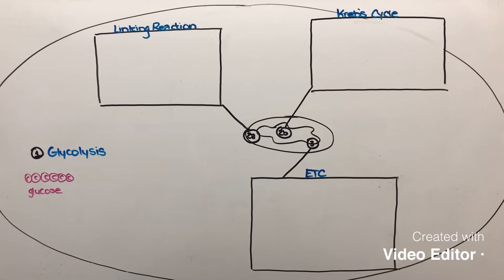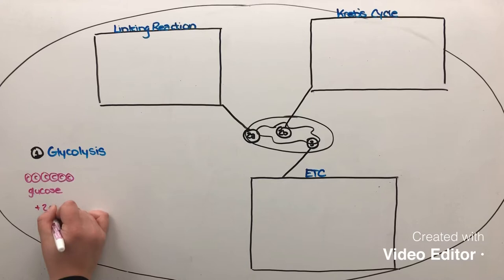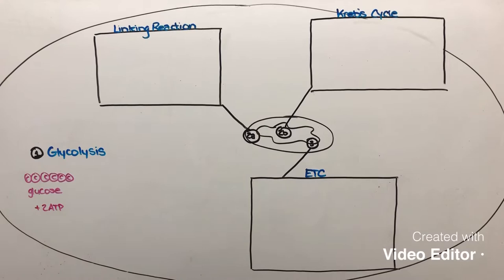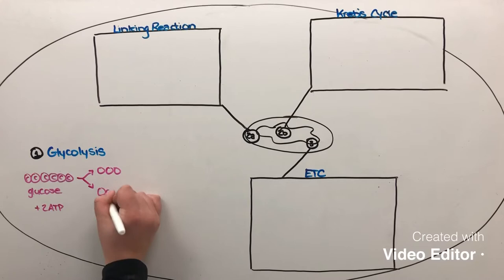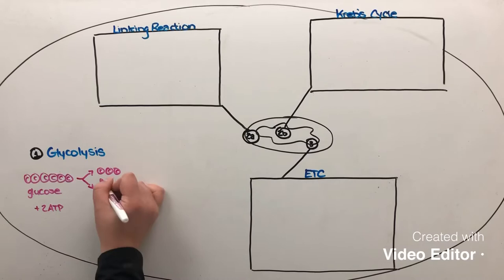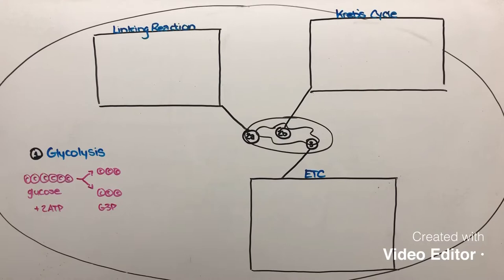The first reaction that allows that to occur is the reaction of glucose with two molecules of ATP. So in order to generate ATP in our final stage we need a small input initially. The reaction between glucose and ATP is going to end up splitting that six-carbon molecule into two three-carbon molecules. The name of those are G3P. So our first reaction in glycolysis generates two molecules of G3P.